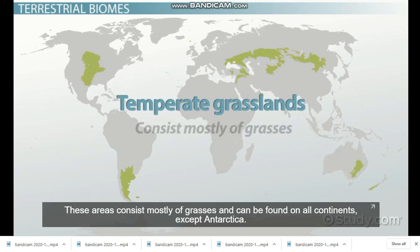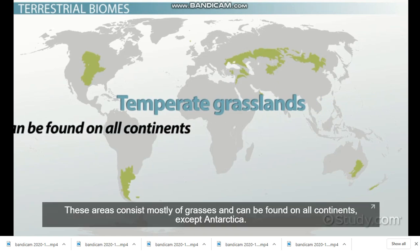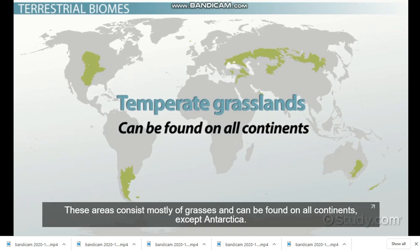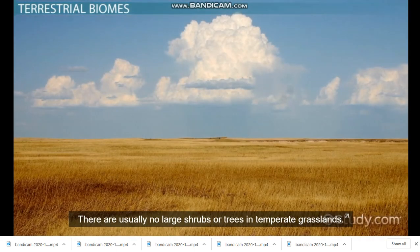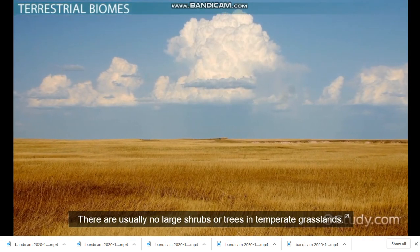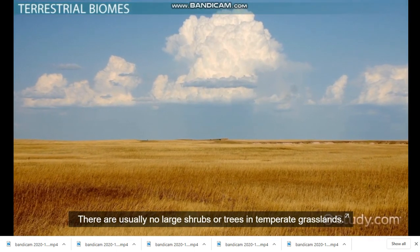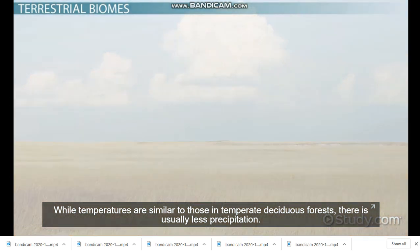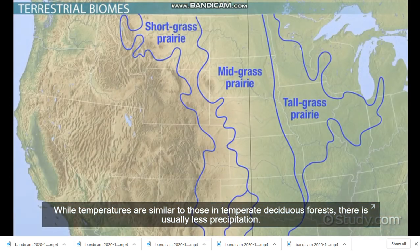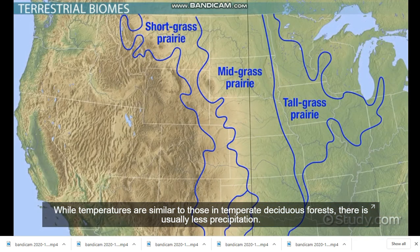The prairies in the Midwestern United States are considered temperate grasslands. These areas consist mostly of grasses and can be found on all continents except Antarctica. There are usually no large shrubs or trees in temperate grasslands. While temperatures are similar to those in temperate deciduous forests, there is usually less precipitation.